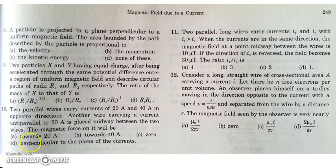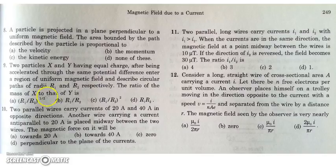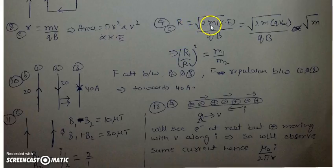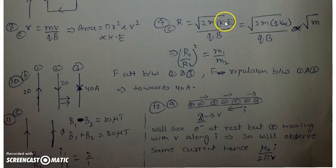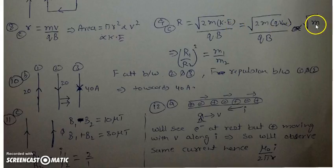In the next question, two particles X and Y have equal charges and are accelerated through the same potential difference before entering a magnetic field region, describing circles of radius R1 and R2. We have to find the ratio of their masses. The radius is given by R = √(2mKE) / QB. Since accelerating voltage, charge, and magnetic field are the same for both, R is simply proportional to √M. Therefore R1/R2 squared equals M1/M2.